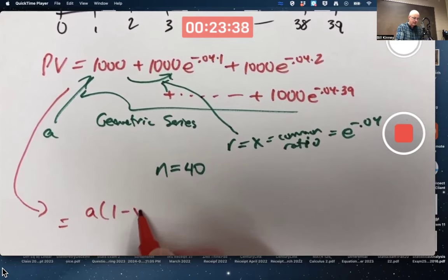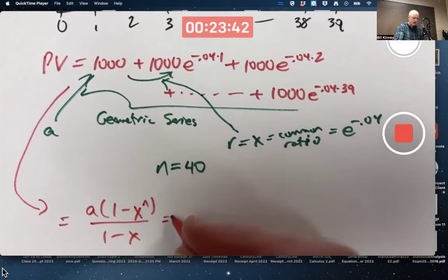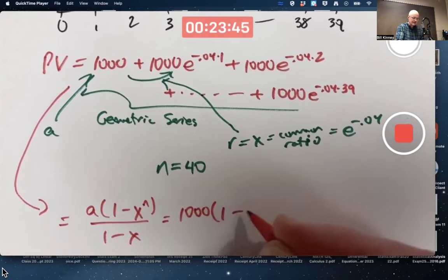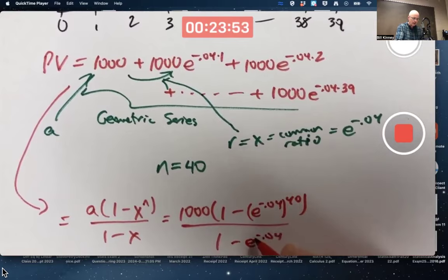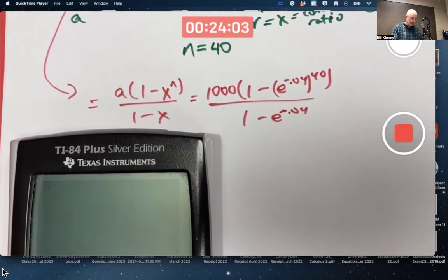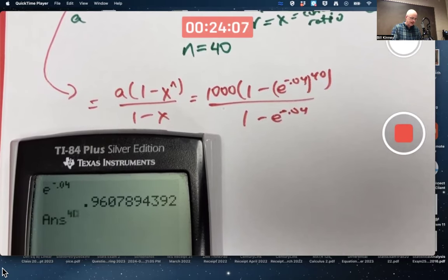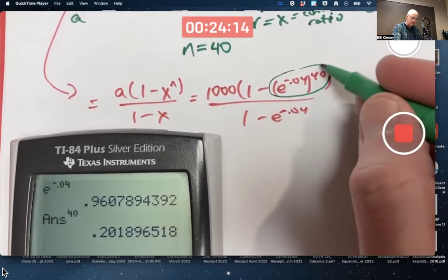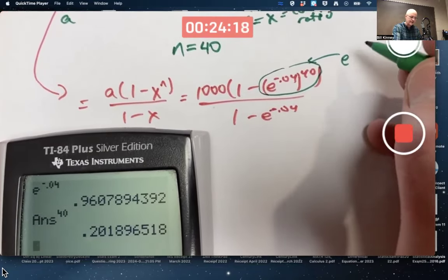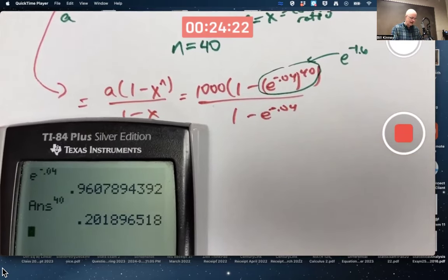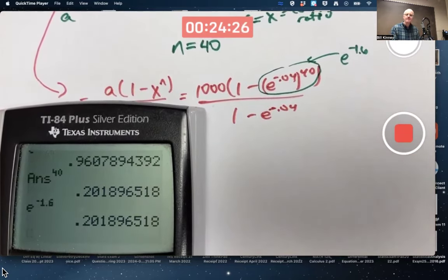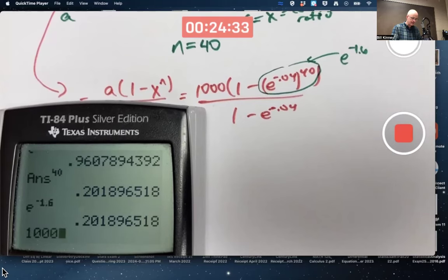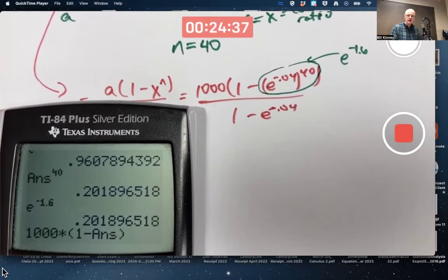So we now use the formula for a finite geometric series. A times 1 minus X to the N over 1 minus X. 1,000 times 1 minus E to the negative 0.04 to the 40th over 1 minus E to the negative 0.04. Go ahead and compute this now. E to the negative 0.04 to the 40th is about 0.2. I hope you also realize, looking at this, that you could also use properties of exponents to multiply those exponents and write this as E to the negative 1.6. Let's check that. E to the negative 1.6 is the same thing. I take 1 minus that and multiply by 1,000. So I'll do that in one step here. 1,000 times 1 minus the previous answer gives you a numerator, 798.1.